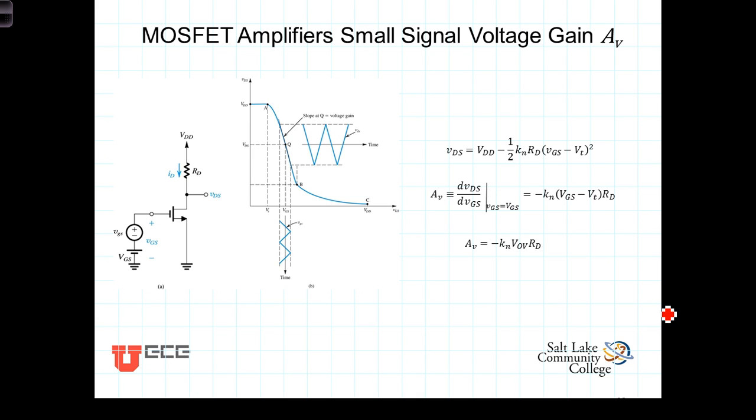As we've seen, the amplifier, or the transistor in the amplifier, is biased at some point Q corresponding to a DC voltage V_GS and the corresponding DC voltage V_DS.